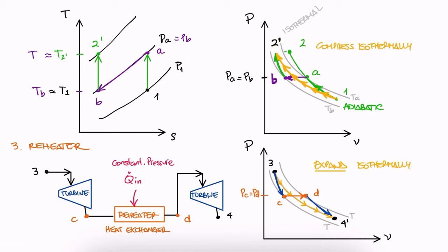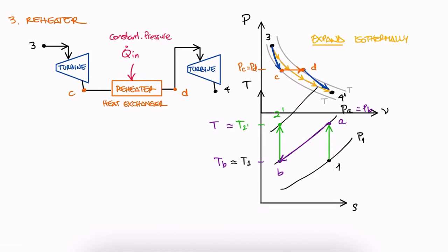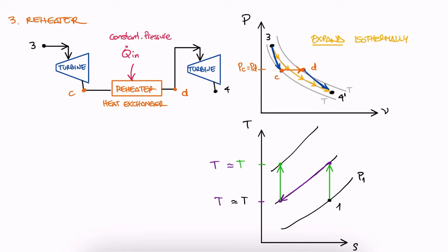The TS diagram would be similar to what we just saw with the intercooler. We would see three pressures, a downward vertical expansion from 3 to C, heat bringing up the temperature at constant pressure from C to D, and another vertical expansion from D to 4 prime.